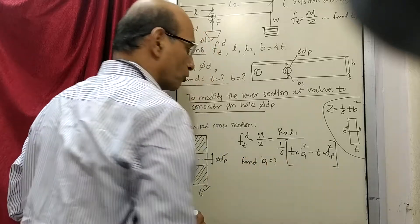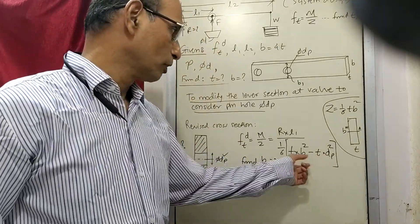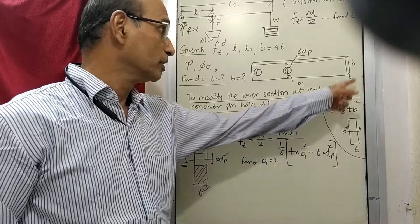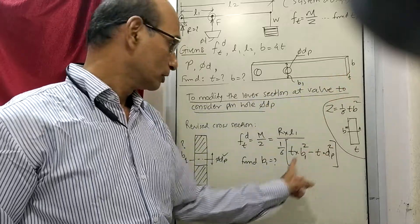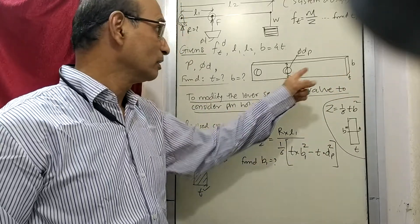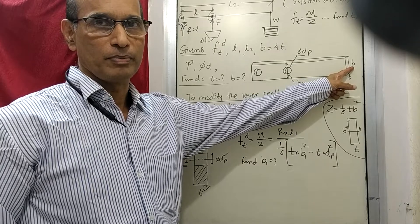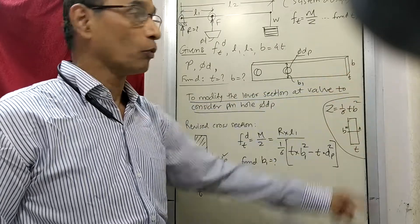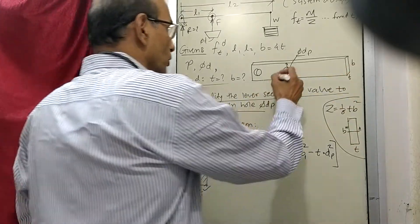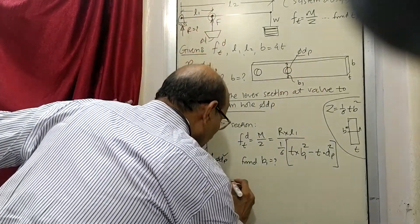When you subtract this, you require to increase the size compared to b, and you will get some value of b1 which is higher than b. Once you do that, at this place the section is going to look different — it will be wider.